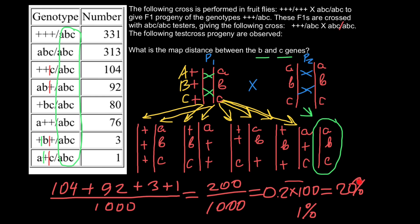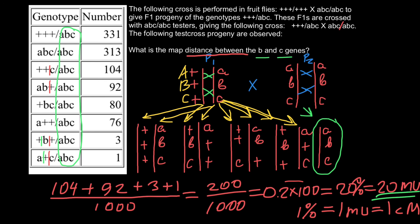The frequency of crossing over gives us the map distance. One percent crossing over equals one map unit, which equals one centimorgan. The distance between genes B and C is 20 map units — that is our answer. Thank you for your attention. See you in the next video. Goodbye.